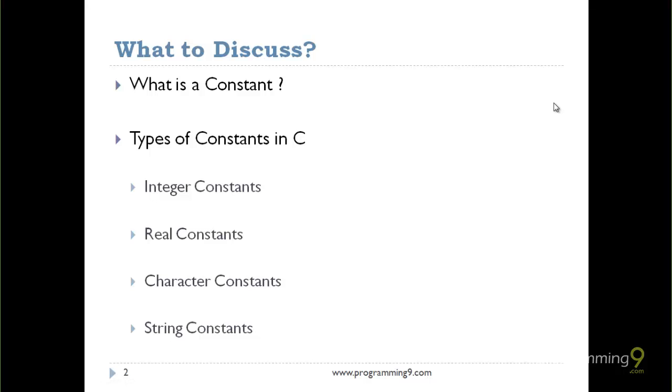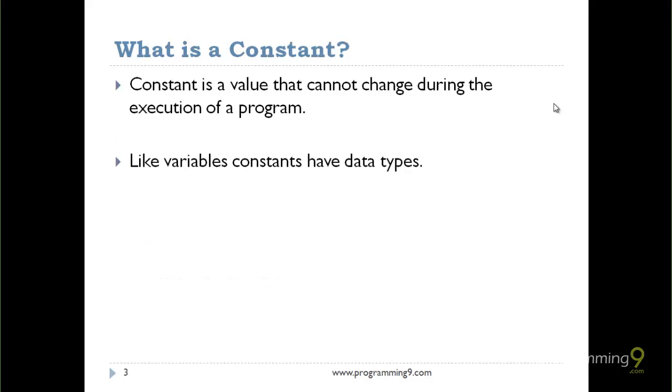In this session, we'll discuss the basic constant definition and different types of constants existing in C programming, like integer constants, real constants, character constants, and string constants. A constant is a simple value that cannot change during the execution of a program.